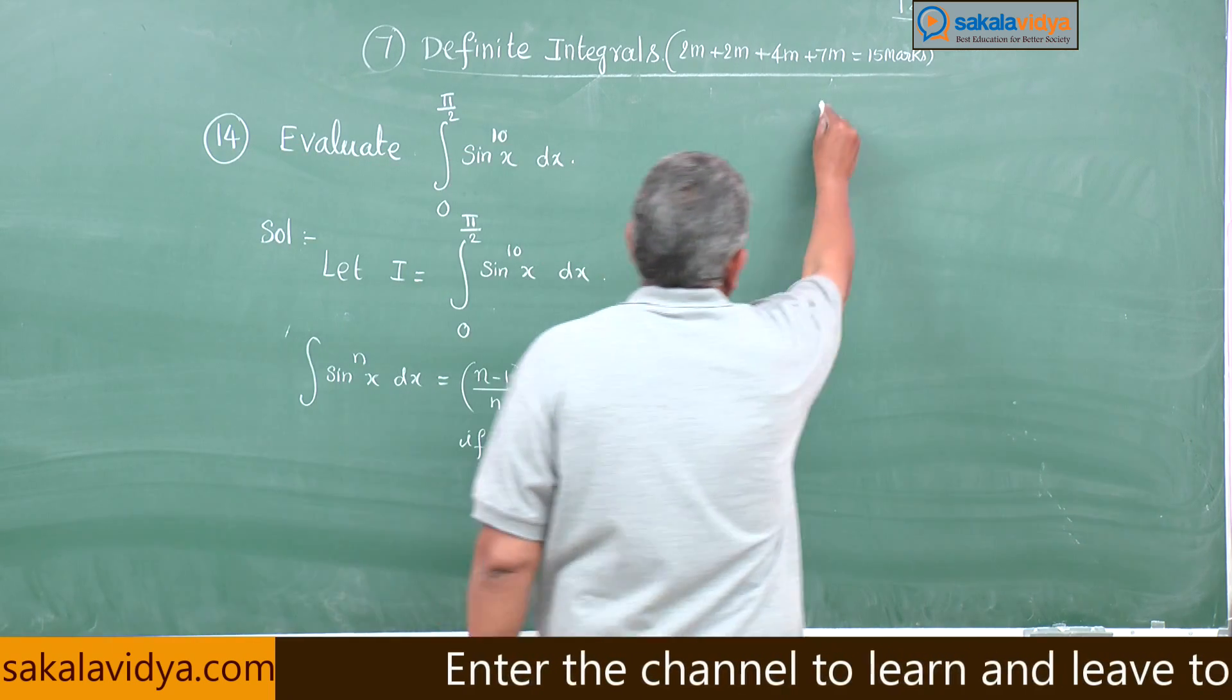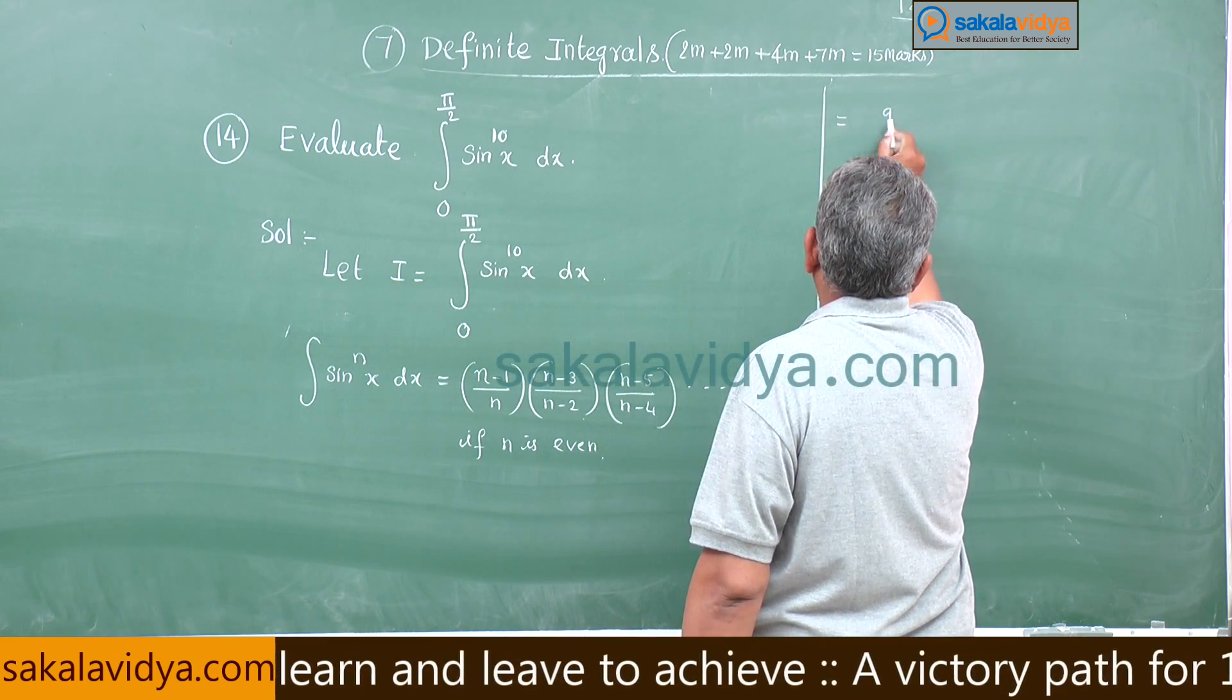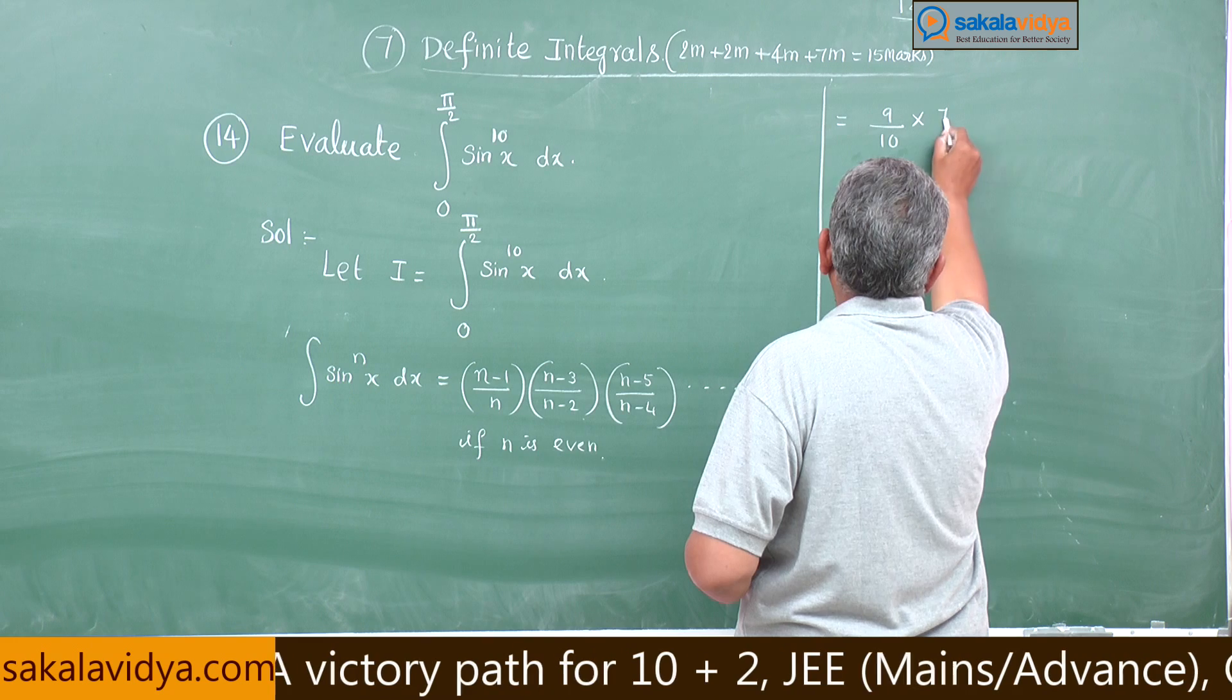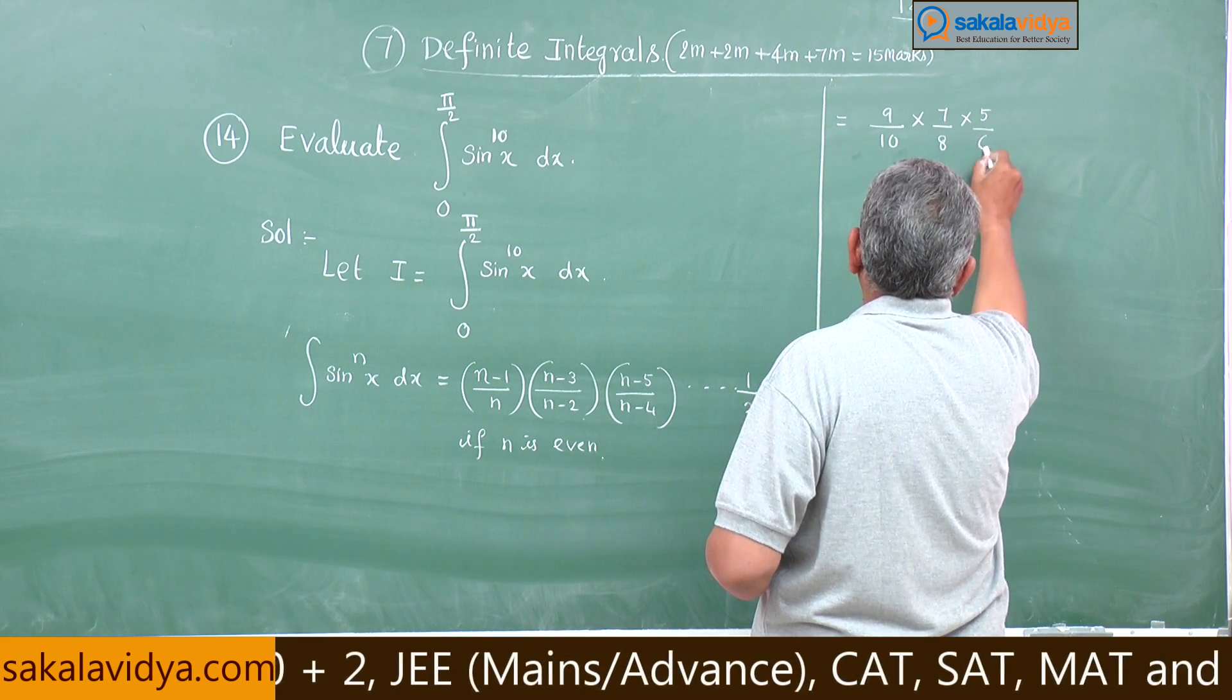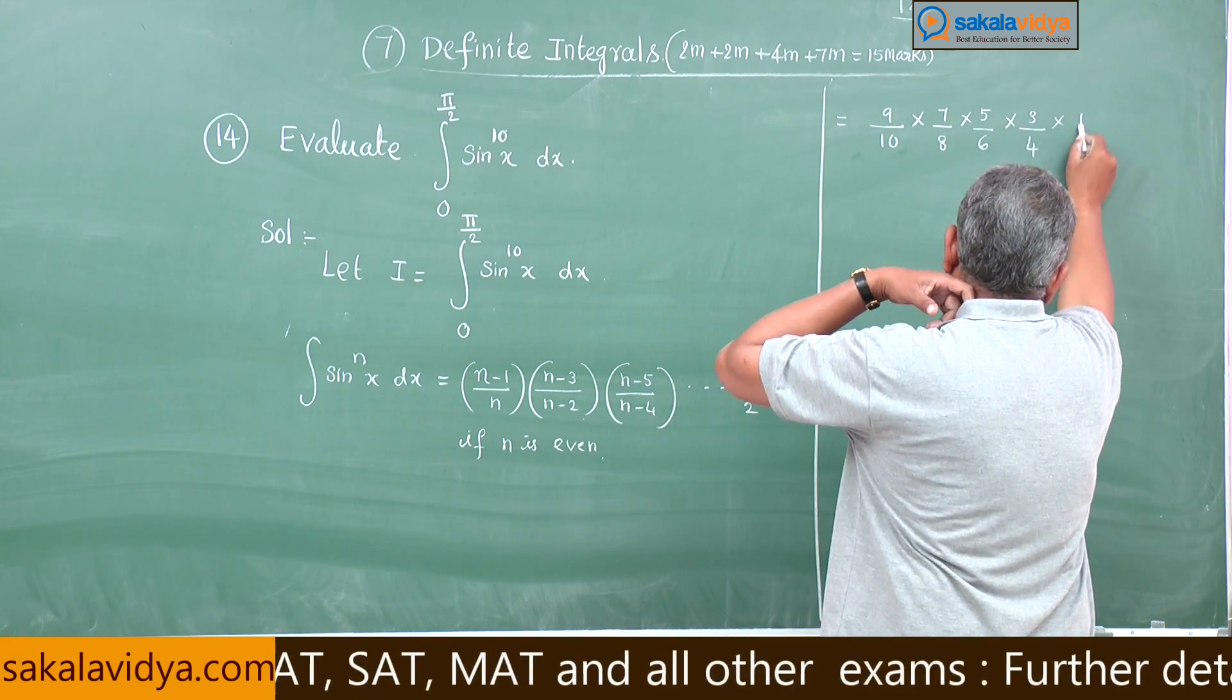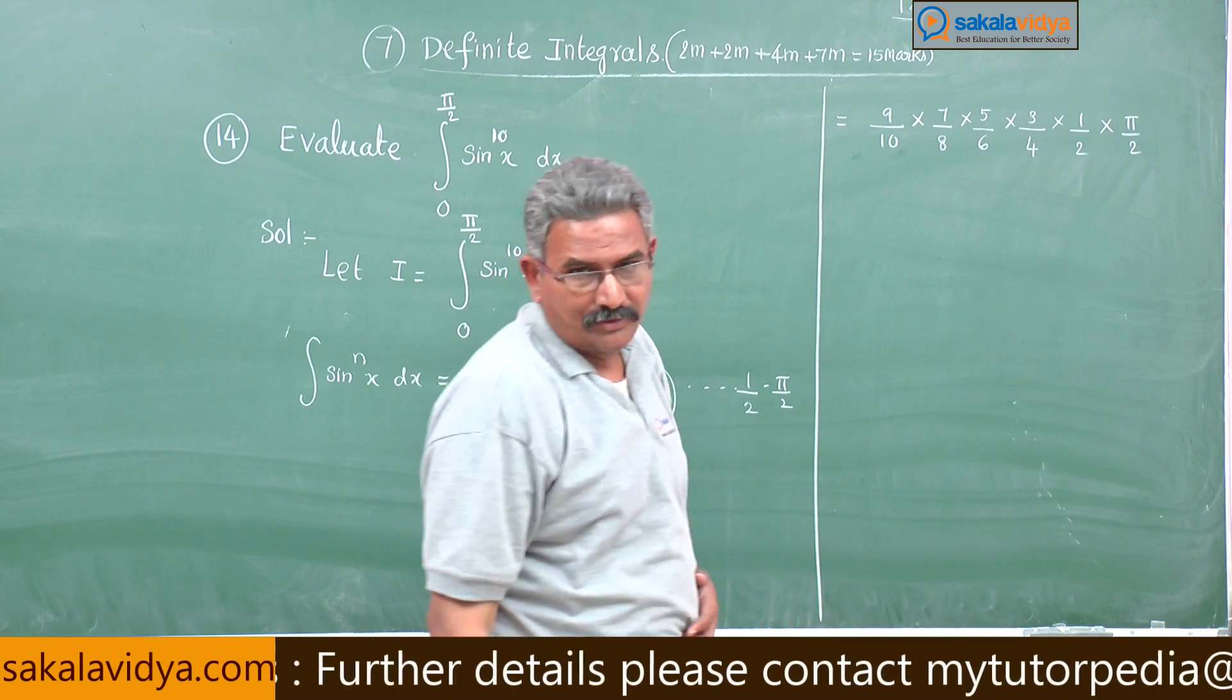Let us apply. So this equals 10 minus 1, 9 by 10 into, difference is 2, 7 by 8, 7 minus 2, 5 by 6 into 3 by 4 into 1 by 2. See 1 by 2 will be the last and multiply by pi by 2.